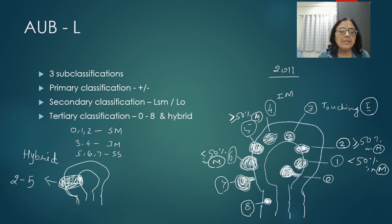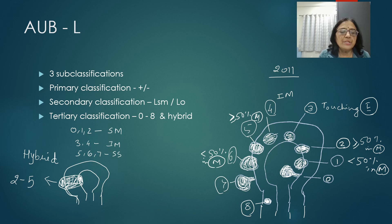A hybrid leiomyoma is one that spans both submucous and subserous compartments. An example is type 2–5: the first digit represents the relationship to the endometrium and the second to the serosal surface. In 2011, types 0, 1, and 2 were submucous; types 3 and 4 were intramural; and types 5, 6, and 7 were subserous.